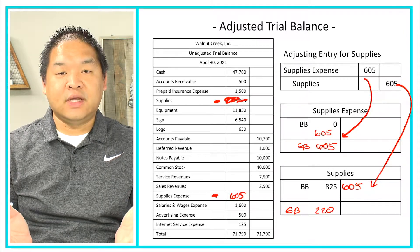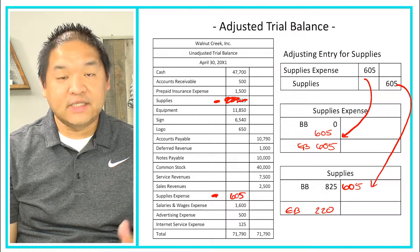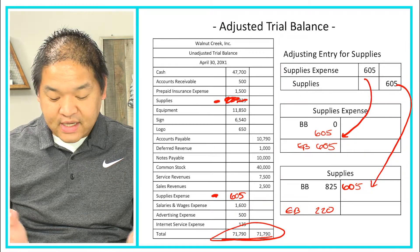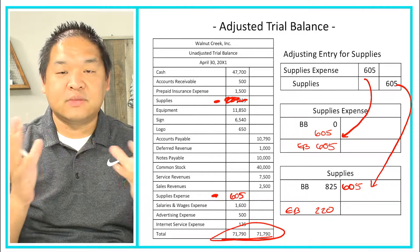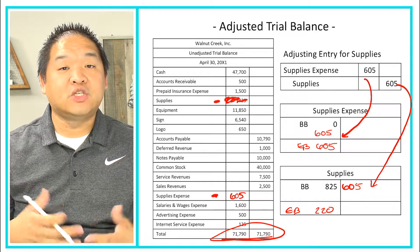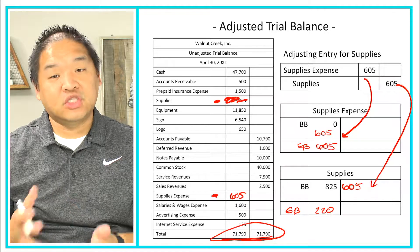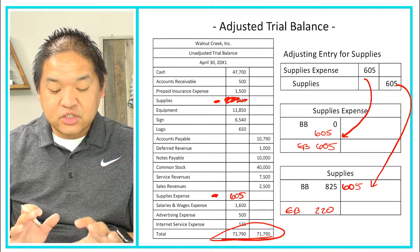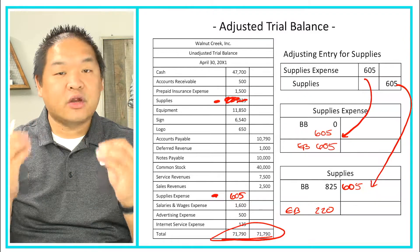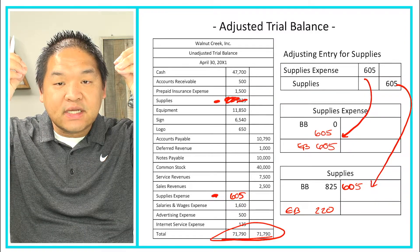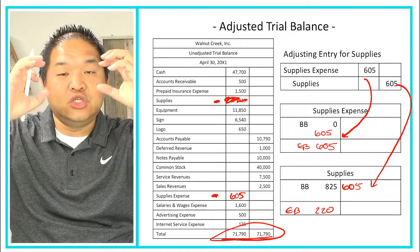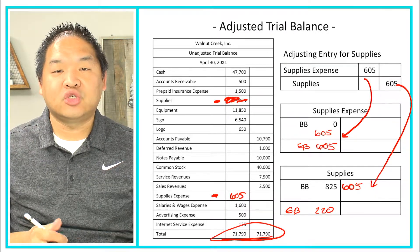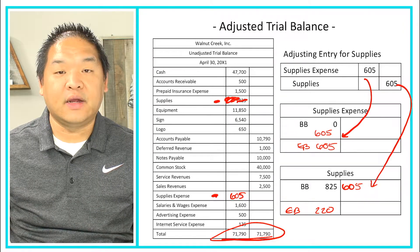When we do adjusting entries, the debit and credit totals may or may not change — in this case they offset each other so the totals remain the same, though some adjustments could affect that. The process is straightforward: take the adjustments, post them to the T-accounts, get the new ending balances, and those new balances flow into the adjusted trial balance.